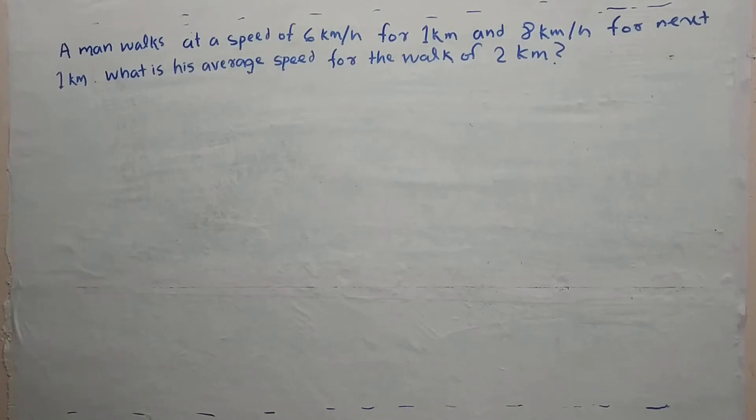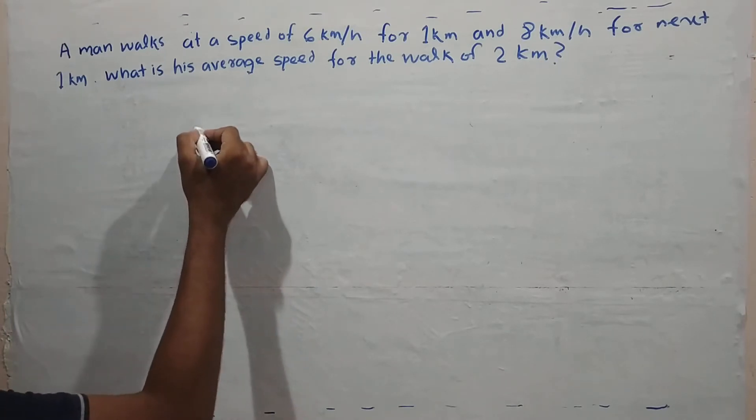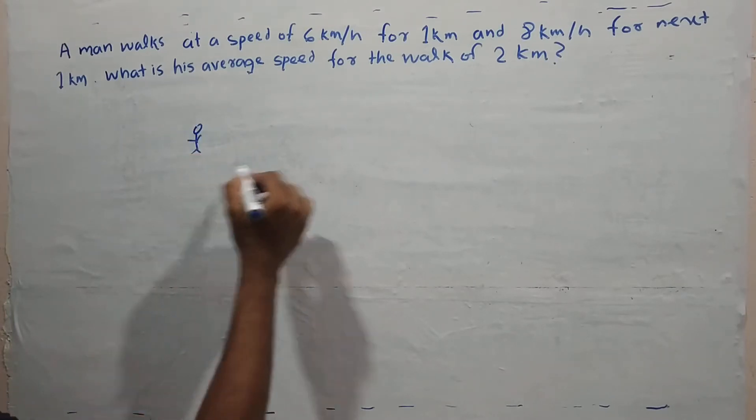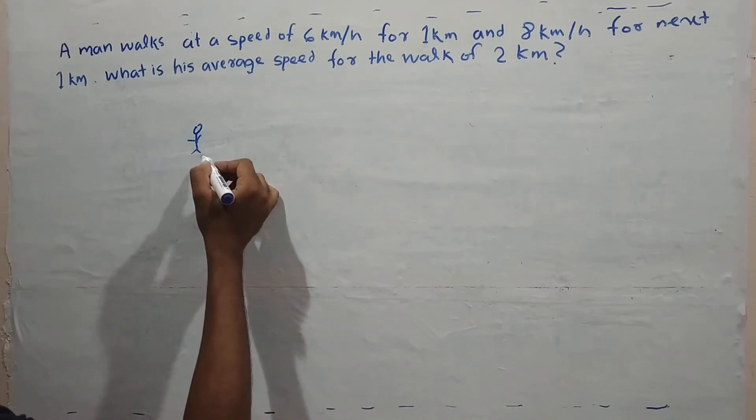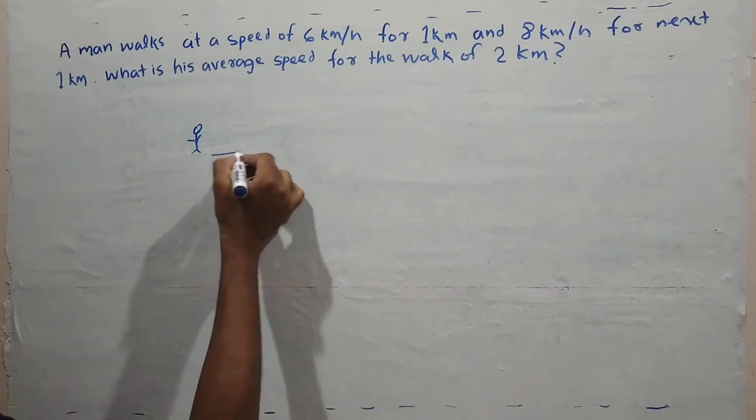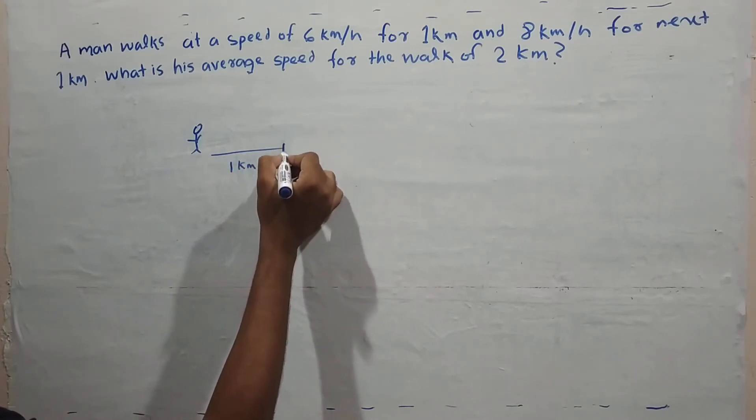A man walks at a speed of 6 km per hour for 1 km and 8 km per hour for the next 1 km. What is his average speed for the walk of 2 km?